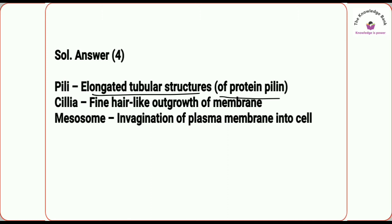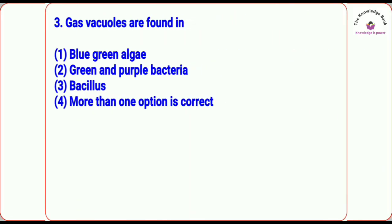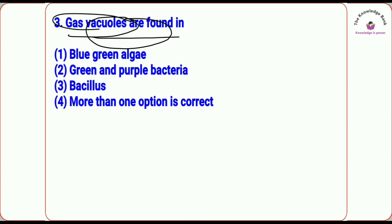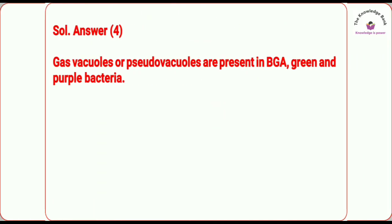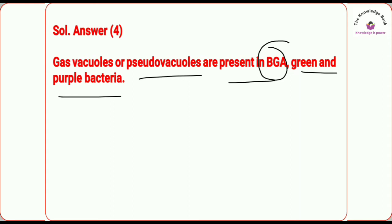Mesosomes are invaginations of the plasma membrane into the cell. Question number three: gas vacuoles are found in 'dash.' Gas vacuoles are found in blue-green algae and green and purple bacteria — more than one option is correct here. Gas vacuoles are present in BGA, green bacteria, and purple bacteria, so option four is right.